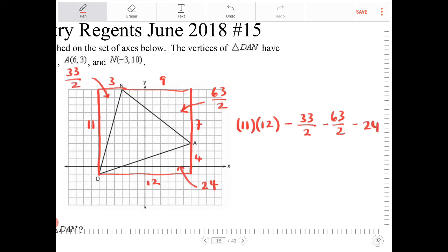Let's do simplification. 11 times 12 - I know that 11 times 11 is 121, plus another 11, that would be 132. Minus 33 halves, 63 halves, that's 96 over 2. 96 over 2 is equivalent to 48 minus 24.